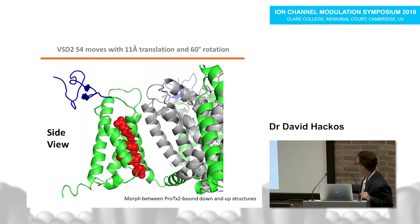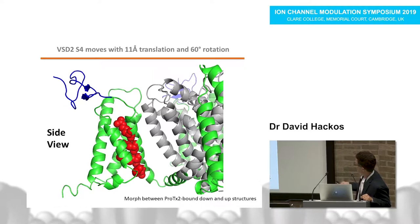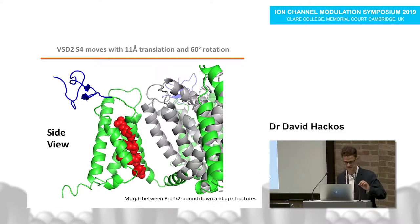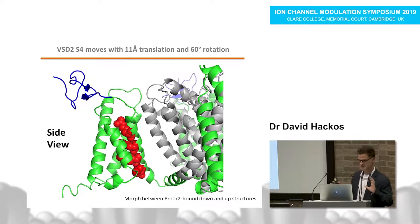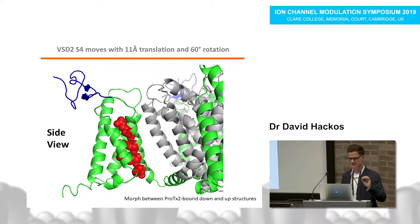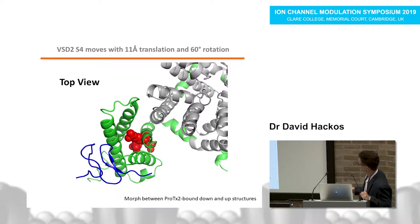Here are morph movies showing movements between the down state and the up state of the VSD2 voltage-sensing domain. In red are the first four arginine residues of the voltage sensor. There is a major upward motion between the down state and the up state, and as it moves up it pulls on the S4-S5 linker alpha helix. The rest of the voltage sensor doesn't move much. ProTx2 does not significantly change its structure between the two states, clearly indicating it can bind in both the up state and the down state.